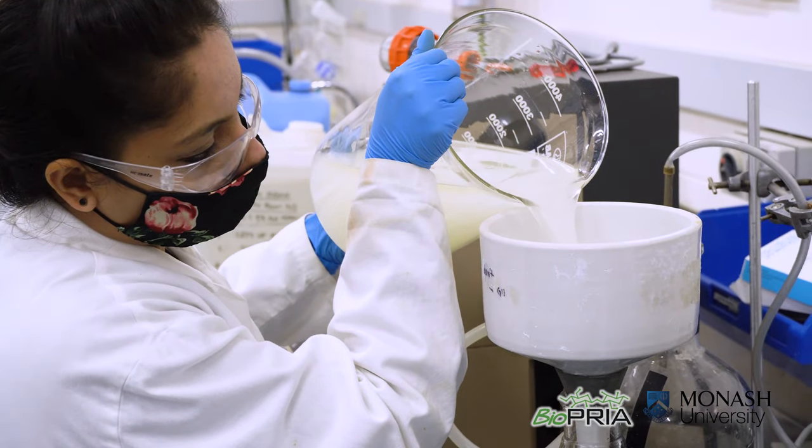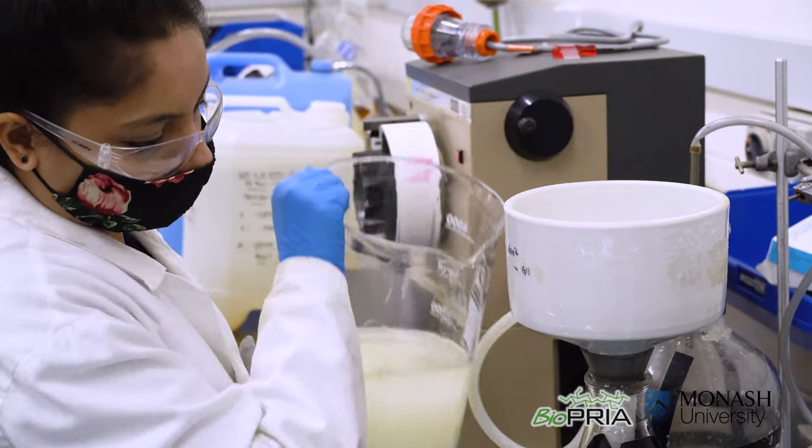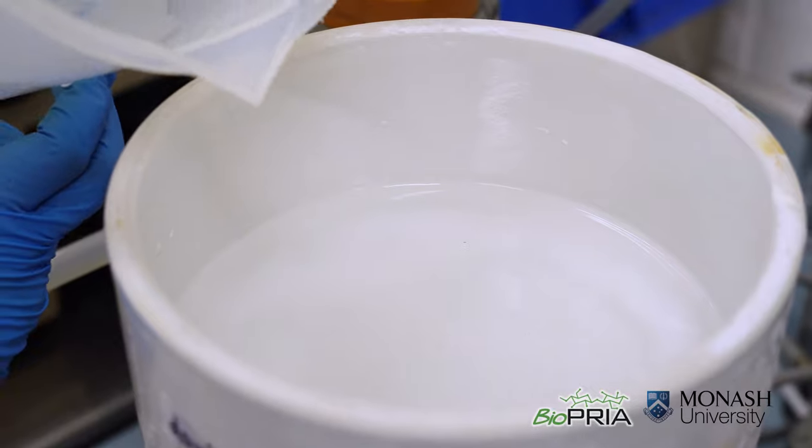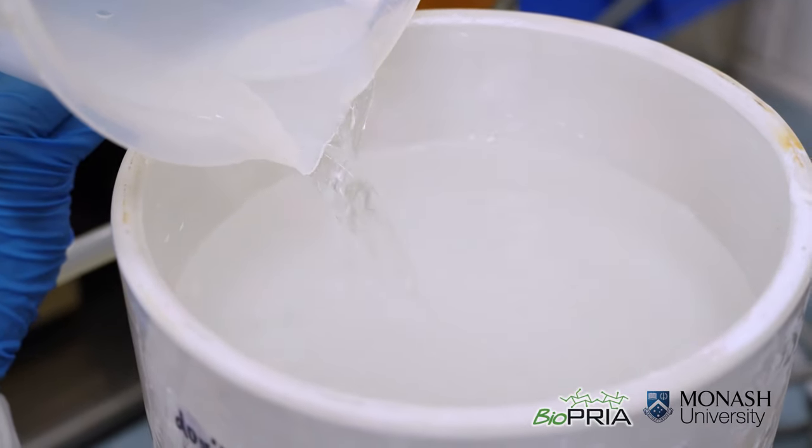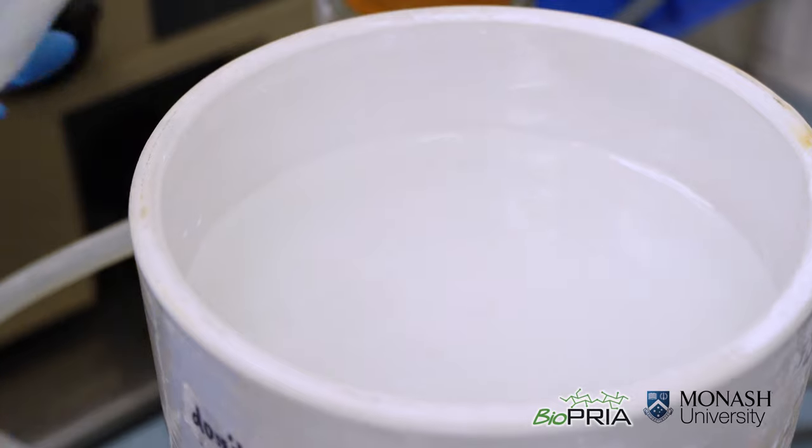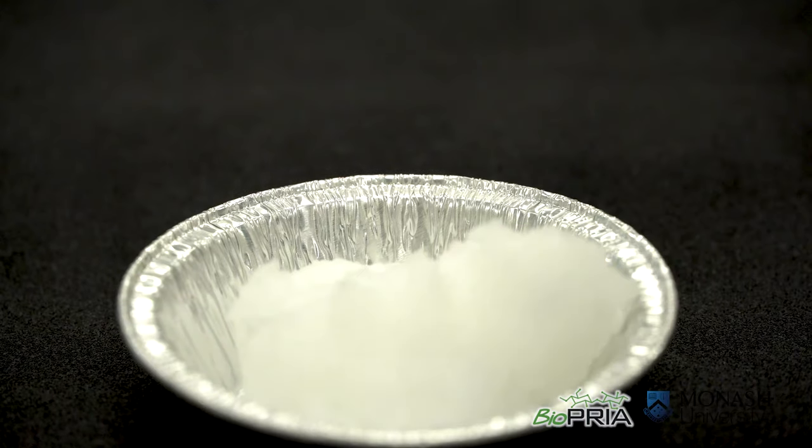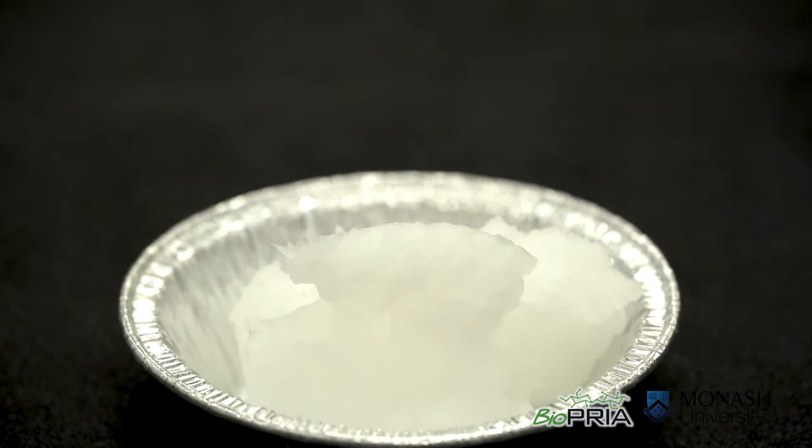After 2 hours we can now isolate the oxidized fibers by vacuum filtration. We will wash the fibers with copious amounts of water until the filtrate becomes neutral. And this is our TEMPO oxidized beaker pulp.